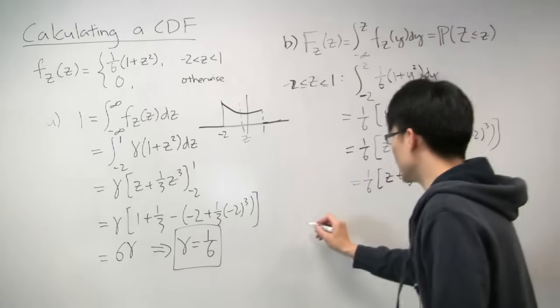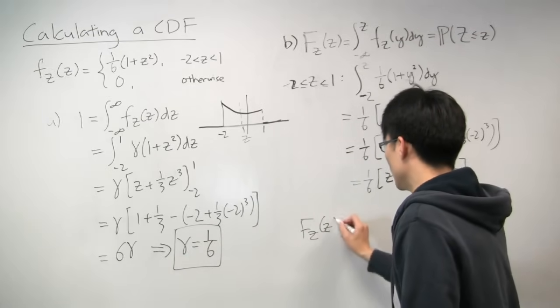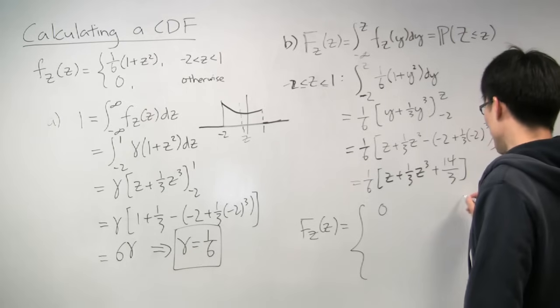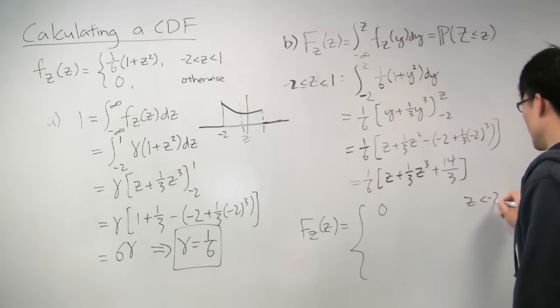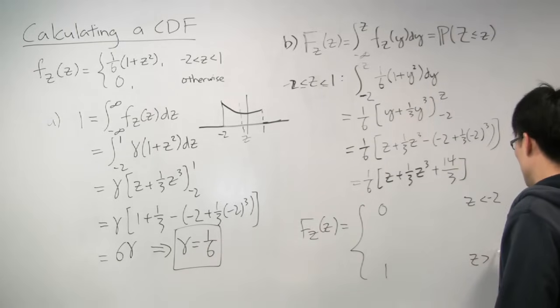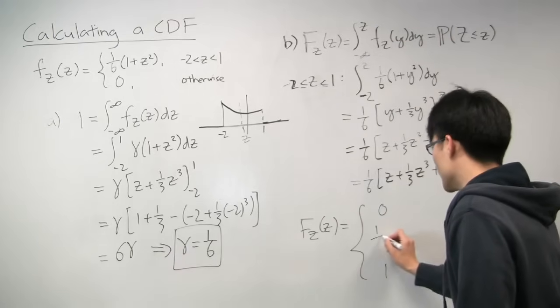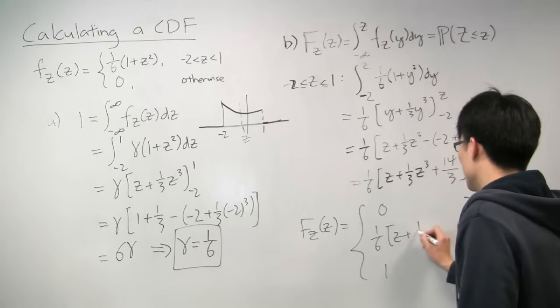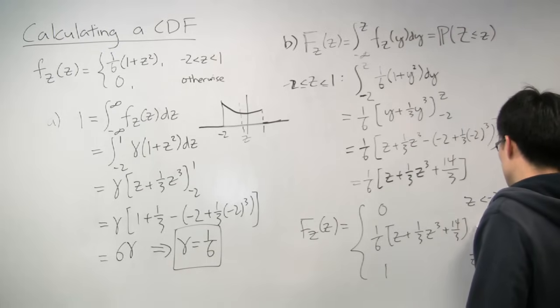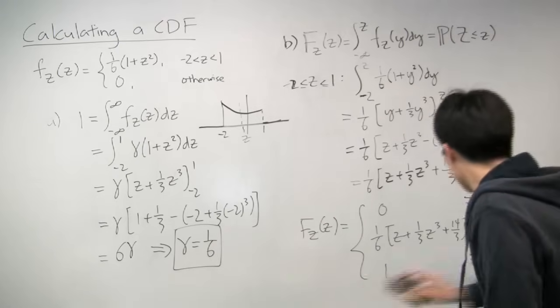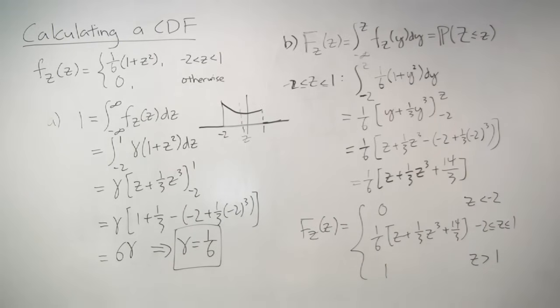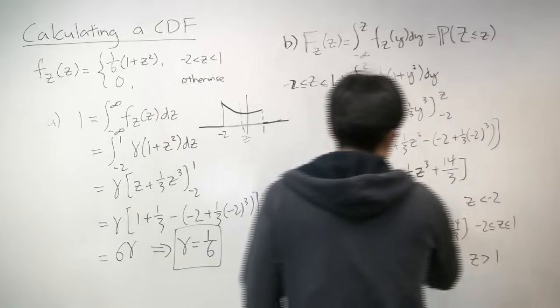So that actually is our CDF between the range of negative 2 to 1. So for full completeness, let's actually write out the entire CDF. Because there's two other parts in the CDF. So the first part is that it's 0 if z is less than negative 2. And it's 1 if z is greater than 1. And in between, it's this part, this thing that we just calculated. So it's 1/6 (z plus 1/3 z cubed plus 14/3) if z is between minus 2 and 1. So that is our final answer.